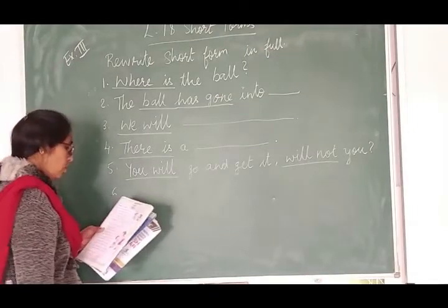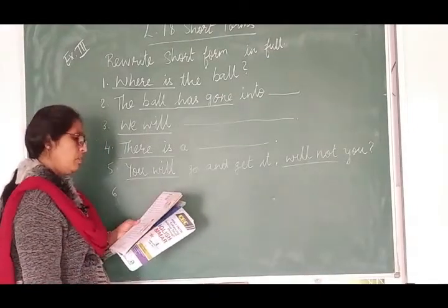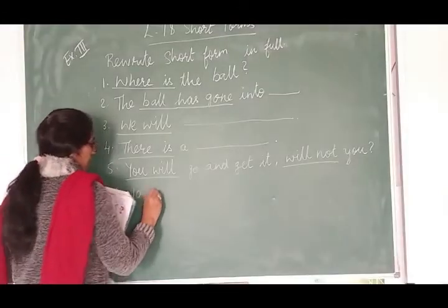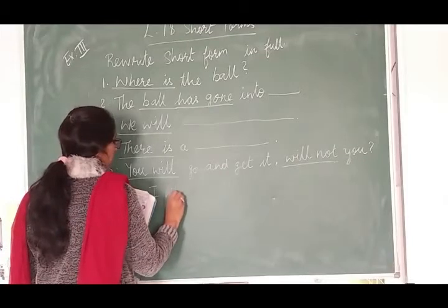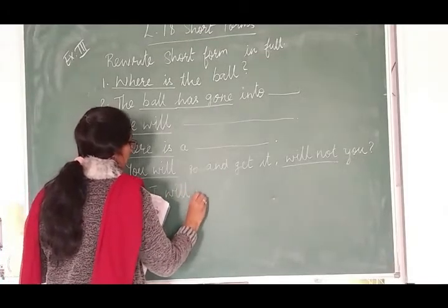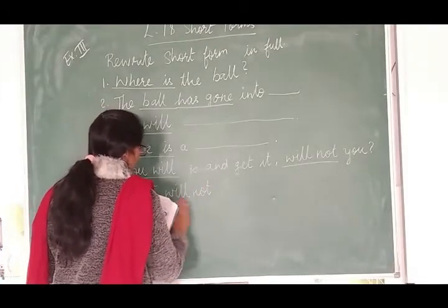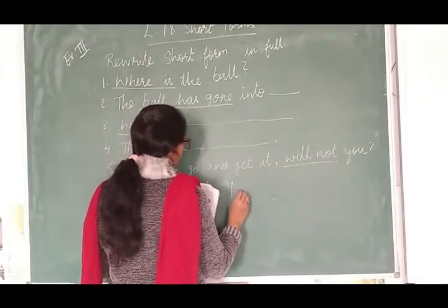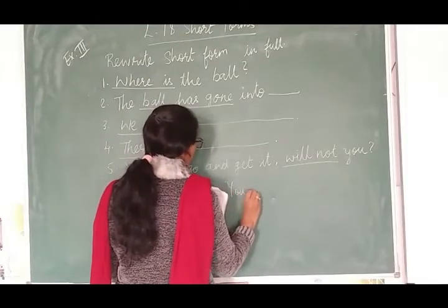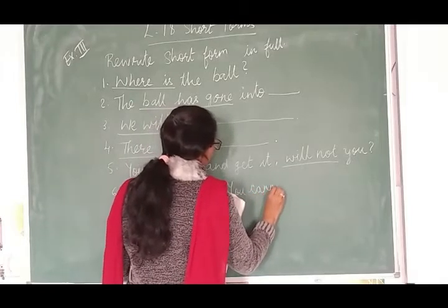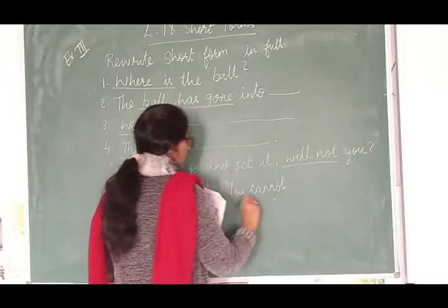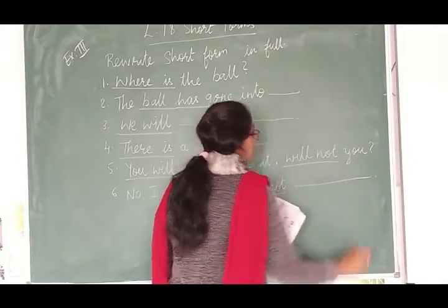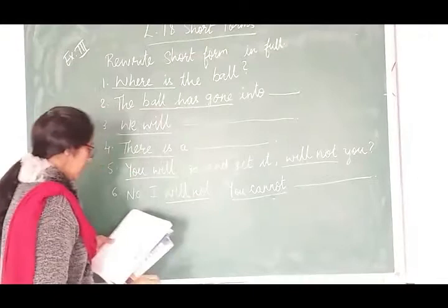Then, next. No, I won't. You can't catch the ball with the stick. Toh, no, comma, I will not. Won't ka kya hota hai full form? Will not. I will not. Underline karo. Then, you, can, can't ka kya hota hai? You cannot. Or, cannot ham. Ek hi word mein. You cannot catch the ball with the stick. Pura sentence, complete karayenge.